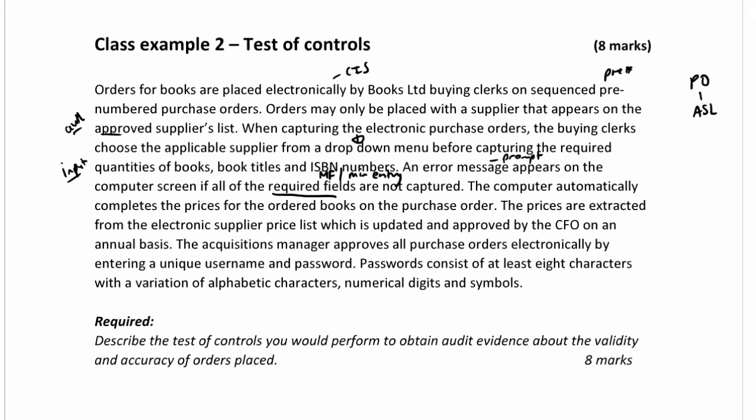The computer automatically completes the prices for the ordered books on the purchase order — an auto control. The prices are extracted from the electronic supplier price list, which is updated and approved by the CFO on an annual basis, giving us an authorized price list.